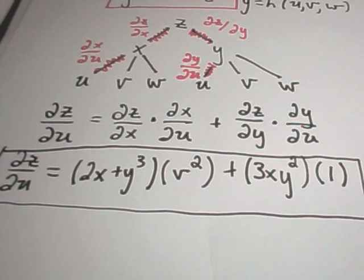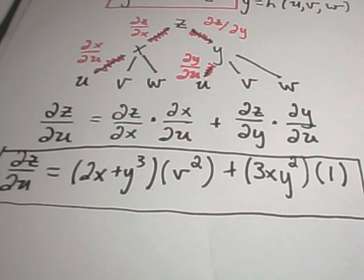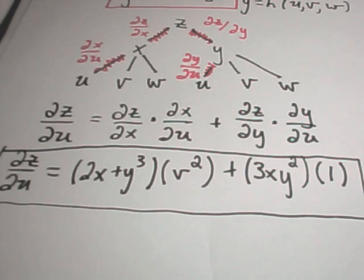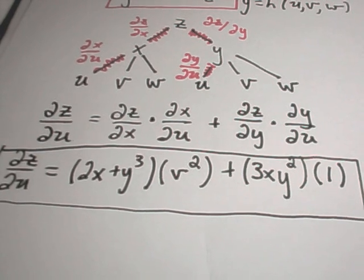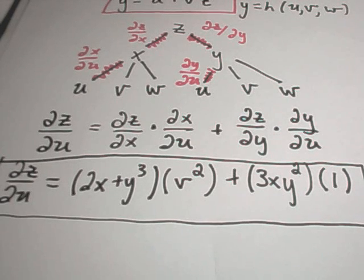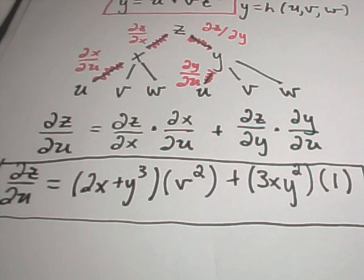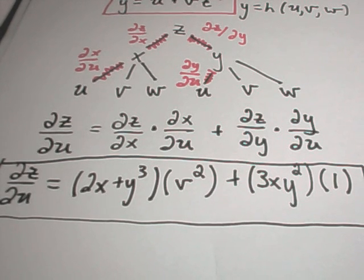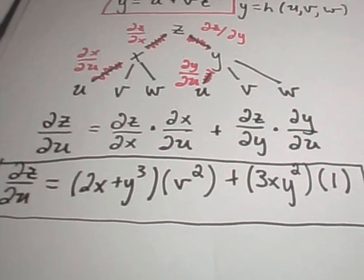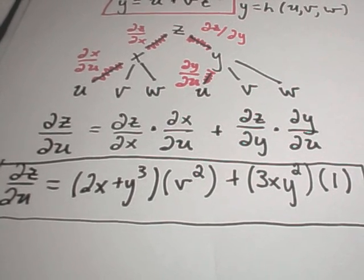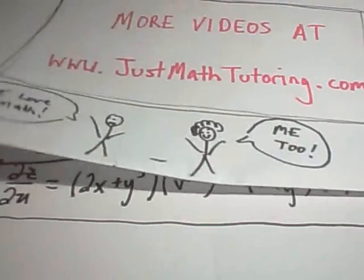Maybe in another video I'll do the other two partials as well, but this is the basic idea: make a tree diagram, follow the branches down, multiply the corresponding branches, and then add the products of the other branches. If you're a little shaky on partial derivatives, I've got a video on partial derivatives you may want to look at. If you have any questions, feel free to shoot me an email. I hope this helps and good luck.